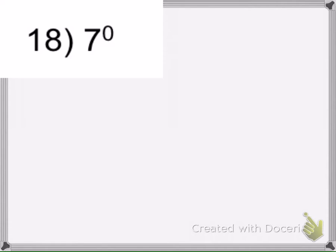Alright, here we have 7 to the 0 power, anything to the 0 power is 1. And again, when an exponent is 0, it represents something like this.